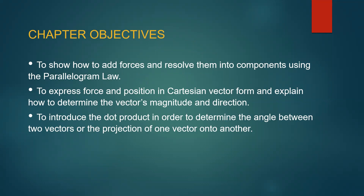In this chapter we're going to look at these objectives. The first thing we'll do is show how to add forces and resolve them into their components using what is known as the parallelogram law. Second, we'll express force and position in Cartesian vector form and explain how to determine the vector's magnitude and direction. Lastly, I'll introduce the dot product to determine the angle between vectors or the projection of one vector onto another.